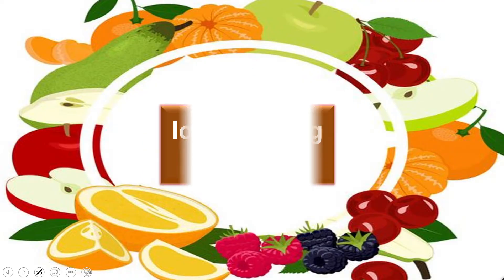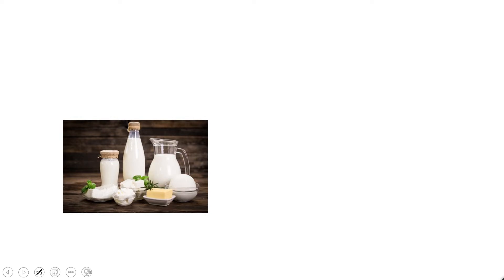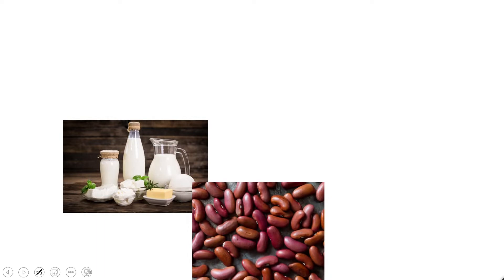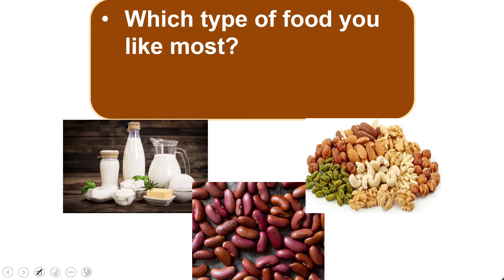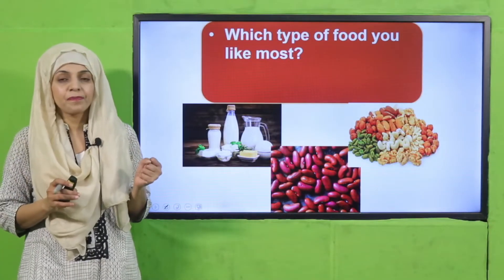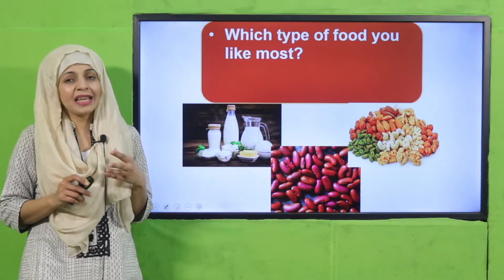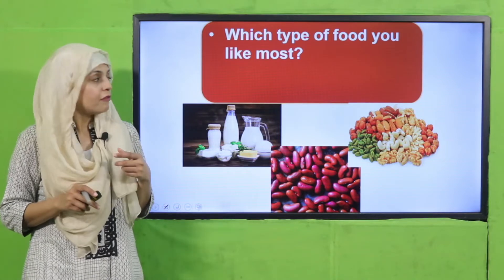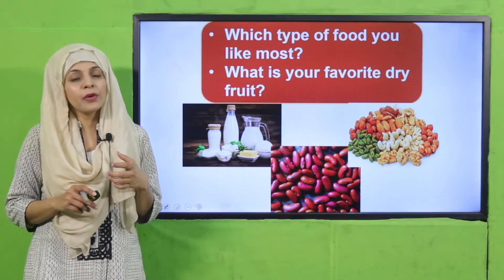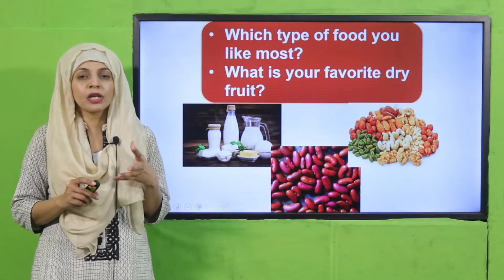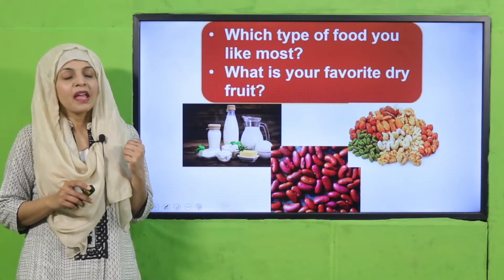Now it's time for an activity. Here you can see some dairy products like milk, butter, and cheese. Then there are red beans and dry fruits. Which type of food do you like most? For example, I really like biryani. What is your favorite food? What is your favorite dry fruit? I really like cashews and I also like pistachios.